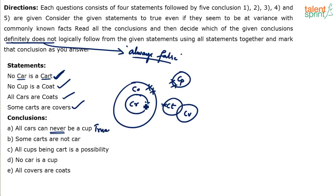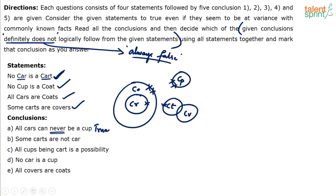It's true — cars and cups cannot touch each other. Now, understand the strategy: only check true or false for each conclusion first. Don't immediately try to decide which one definitely does not follow, because that will confuse you. Just write true or false against each conclusion and then decide at the end.